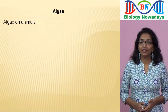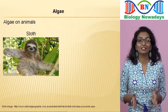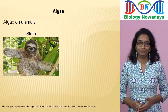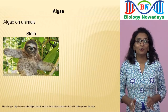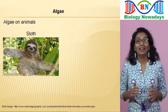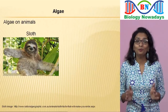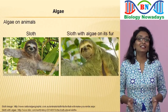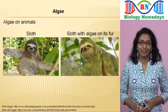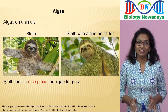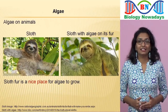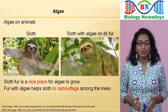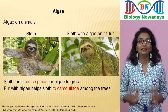Algae can also grow on animals. For example, this is a sloth. Sloths are the slowest mammals on earth — these lazy creatures cover only two meters every minute and sleep for up to twenty hours a day. Because of this lazy lifestyle, algae can easily grow on their fur. Sloth fur is a nice place for algae to grow, and the sloth benefits by getting a light green colour on its fur, which helps camouflage it among the leaves in the rainforest.